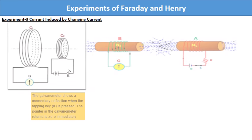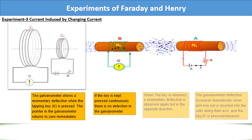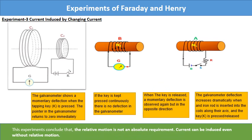It is observed that, the galvanometer shows a momentary deflection, when the tapping key K is pressed. The pointer in the galvanometer returns to zero immediately. If the key is kept pressed continuously, there is no deflection in the galvanometer. Key pressed means circuit is closed and current is passing through the coil C2. Key released means circuit is open and there is no current through the coil C2.